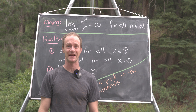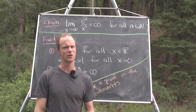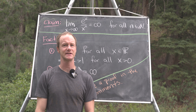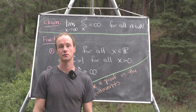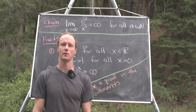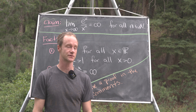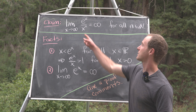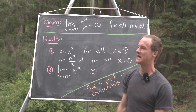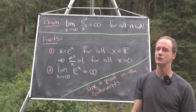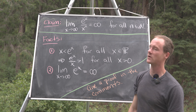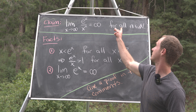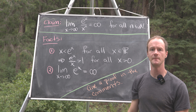Here we're going to prove a pretty standard result that you learn in calculus, but a lot of times in calculus you prove it with L'Hôpital's rule. We're not going to use L'Hôpital's rule. We want to prove that the limit as x goes to infinity of e to the x over x to the n is infinity for all natural numbers n.